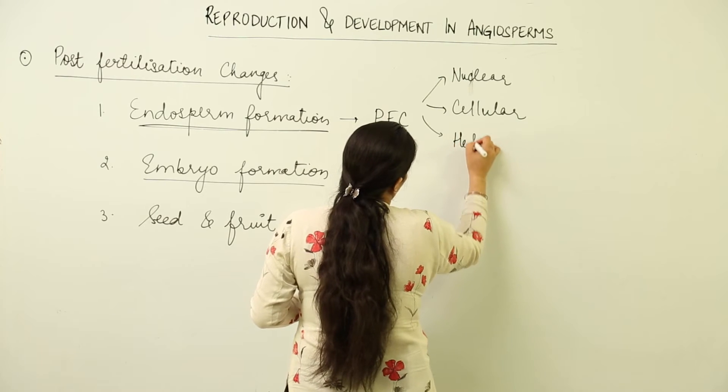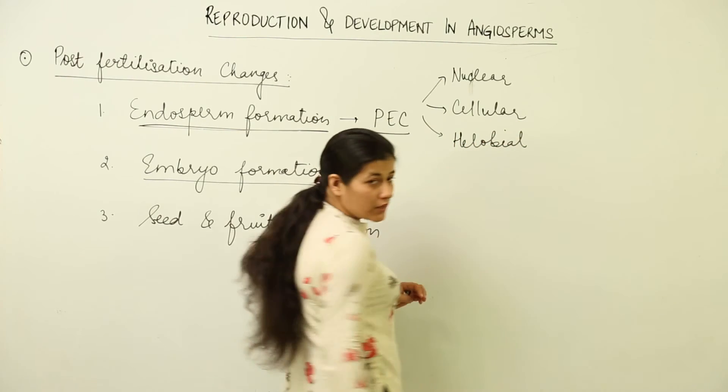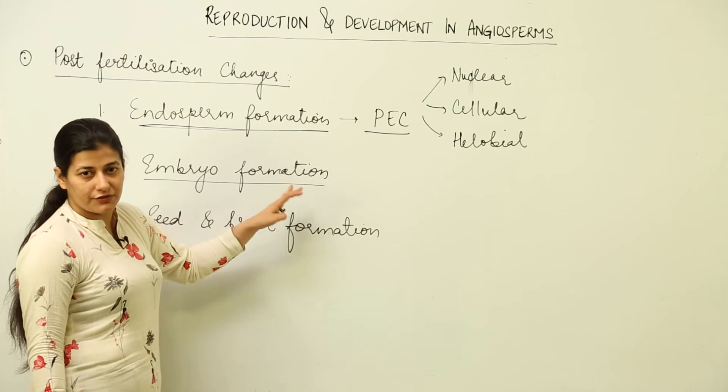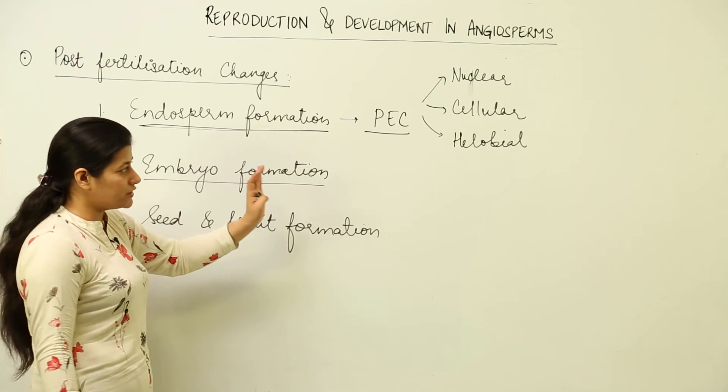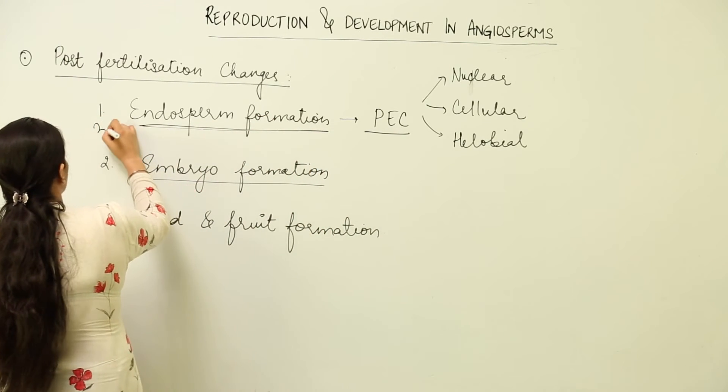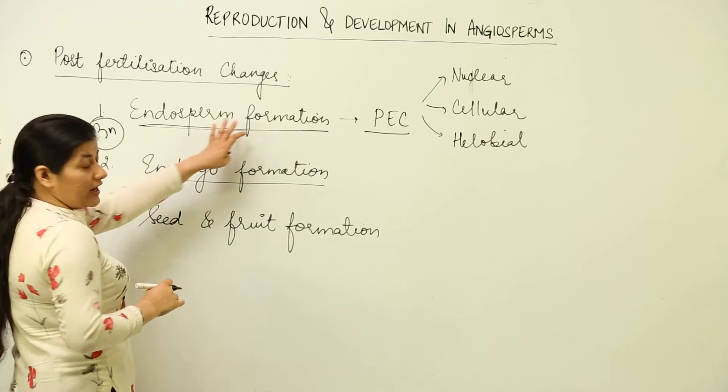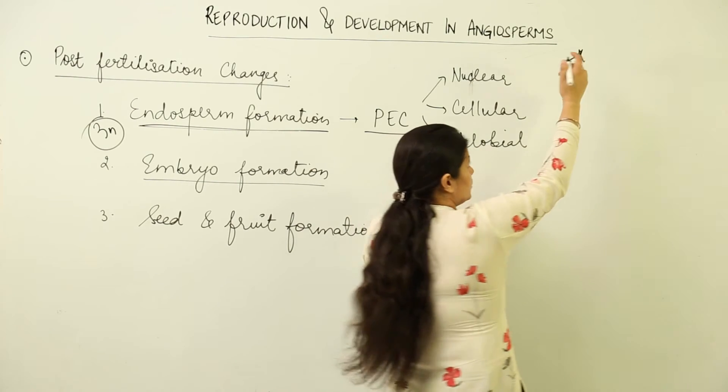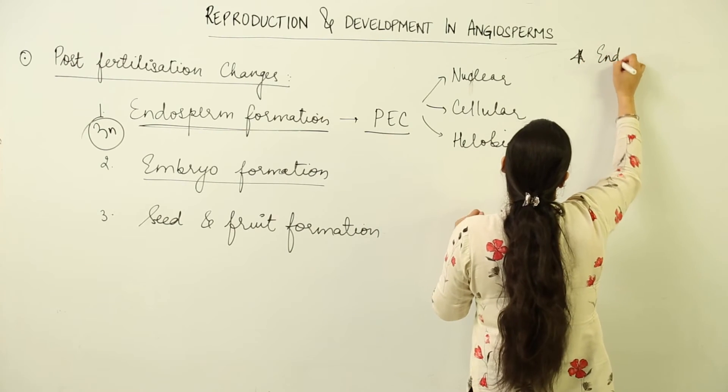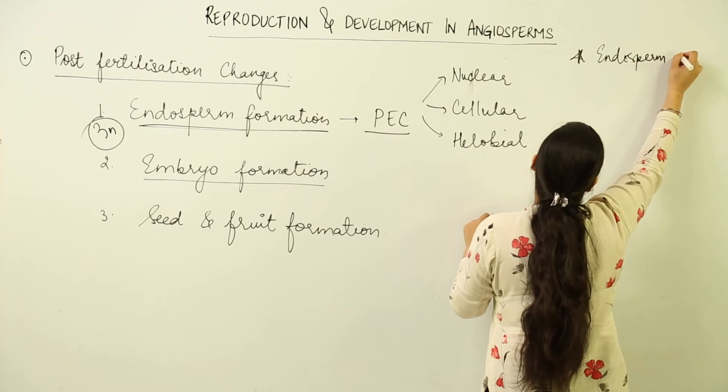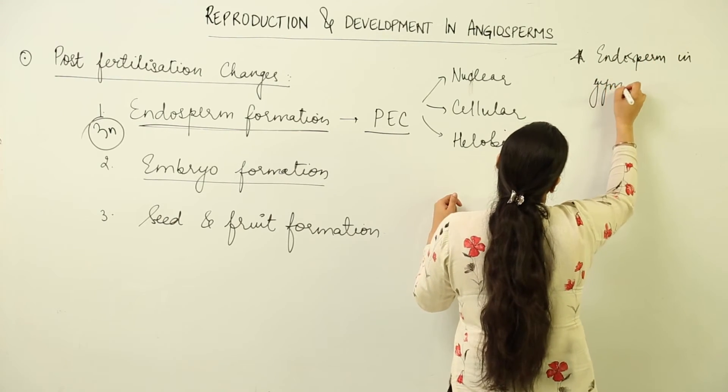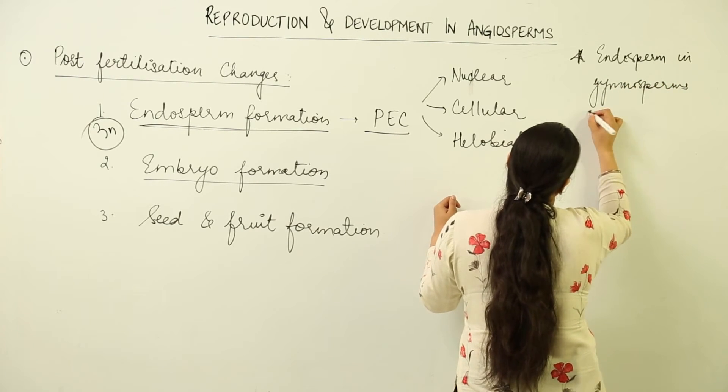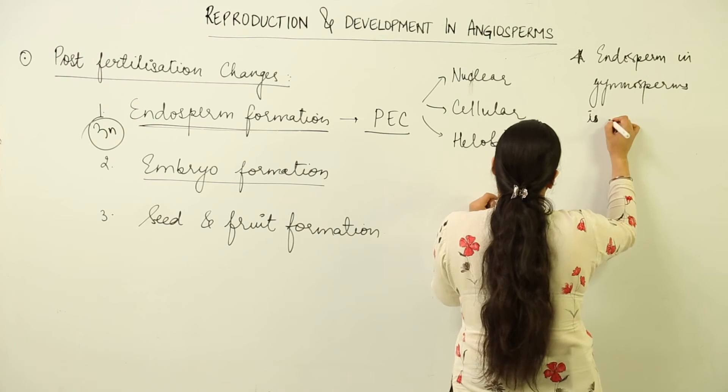The embryo is being formed as a result of division of zygote. Please remember, all are mitotic divisions. This endosperm would be triploid. And please remember this characteristic feature: the endosperm in gymnosperms acts as the female gametophyte.